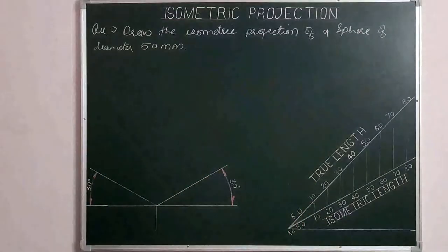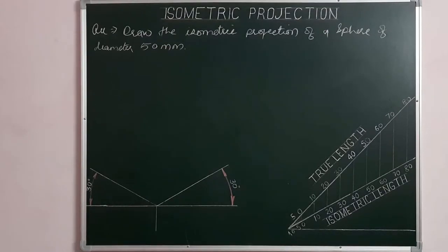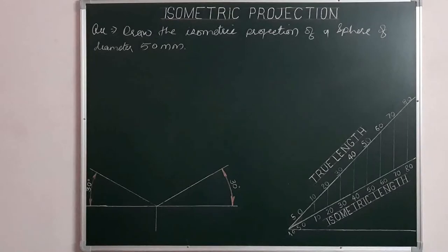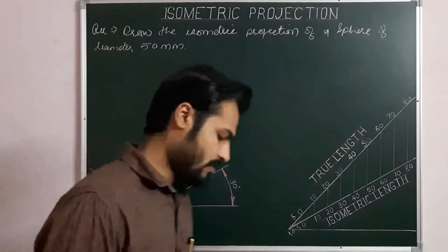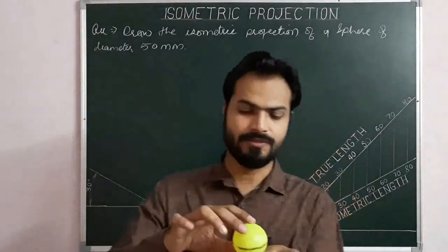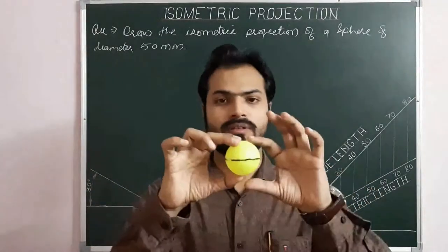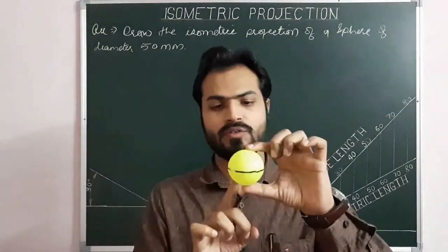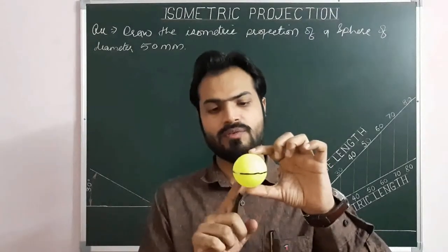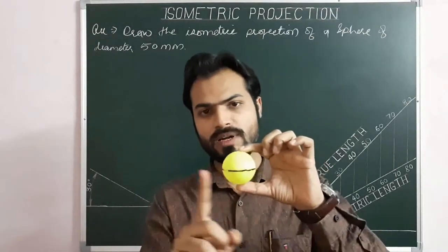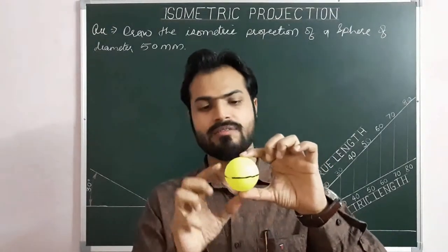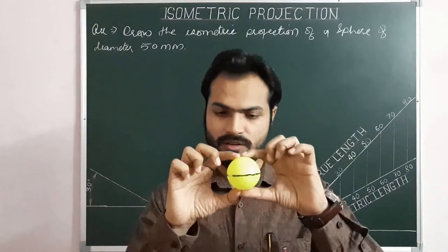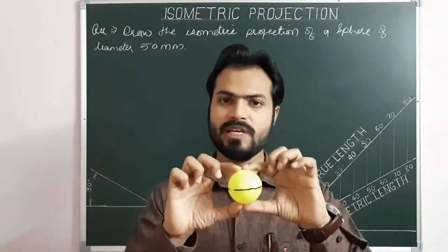Draw the isometric projection of a sphere of diameter 50 mm. From past experience, we know that for a sphere, the view from all directions will be a circle of the same diameter.